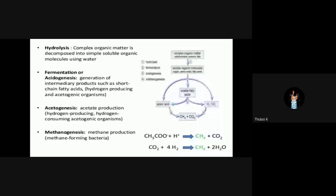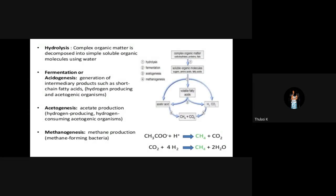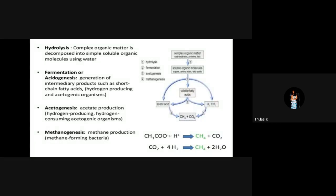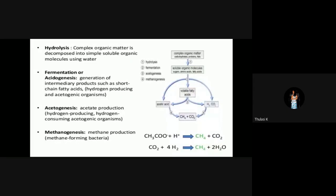Some processes undergone by biogas extraction: first hydrolysis, then fermentation, then acetogenesis (acetate production), then methanogenesis (methane production). There is also some chemical reaction involved. The stages are acetogenesis and methanogenesis.